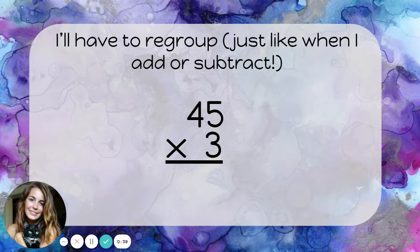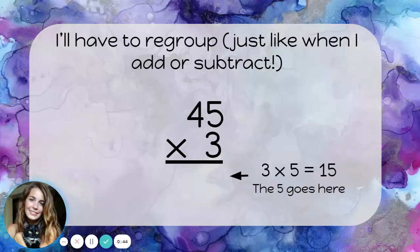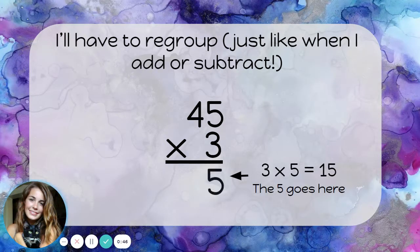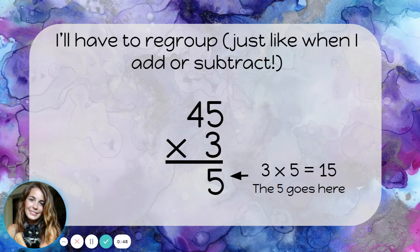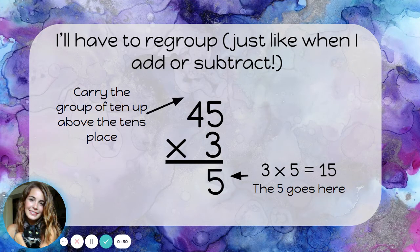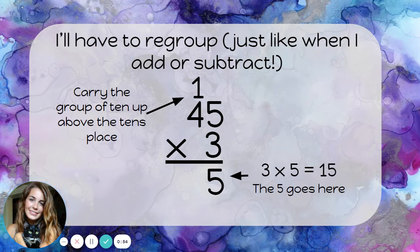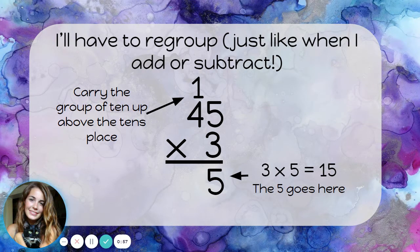I'll have to regroup, just like when I add or subtract. The 5 in 15 goes here in the ones place because those are 5 ones. And I'll carry that group of 10 up above the tens place. The number 15 has a 10 and 5 ones. That 10 should really be with the other tens.